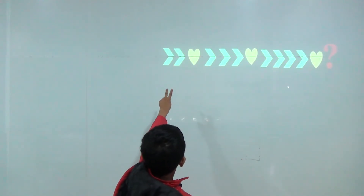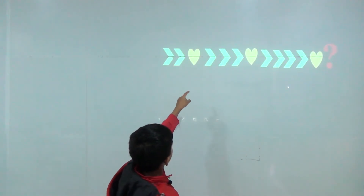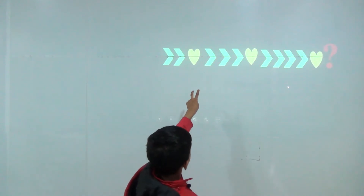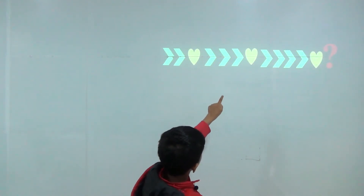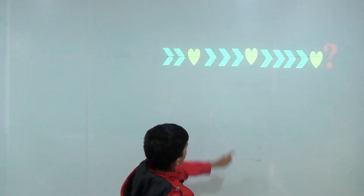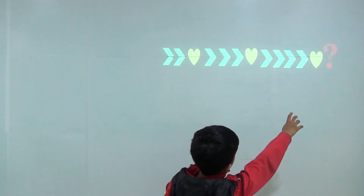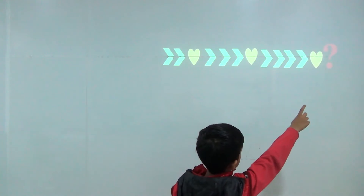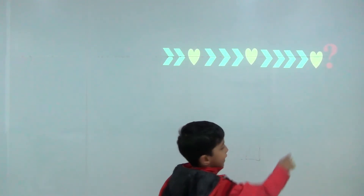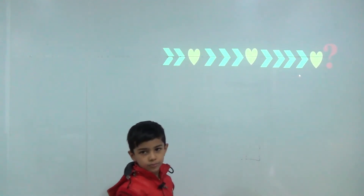Two arrows, one heart. Three arrows, one heart. Four arrows, one heart. So here would be five arrows.